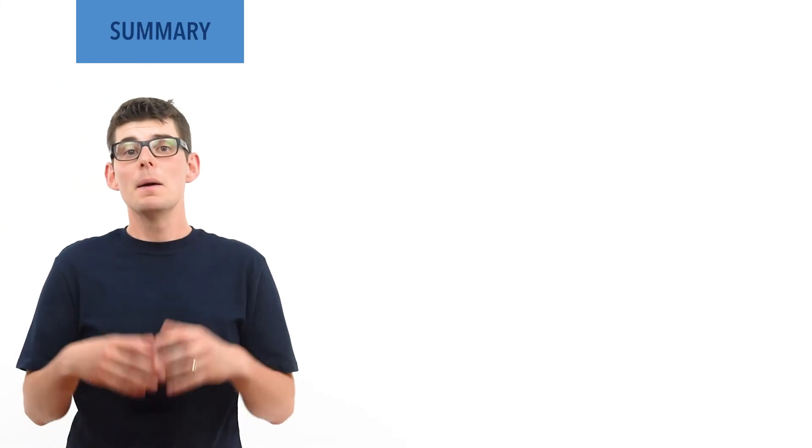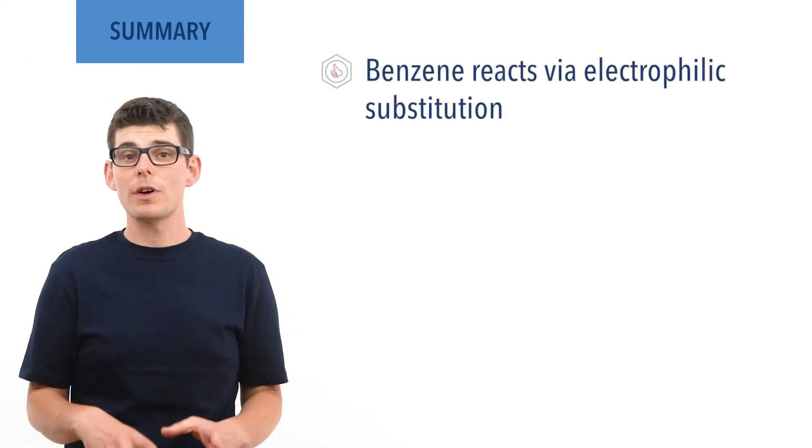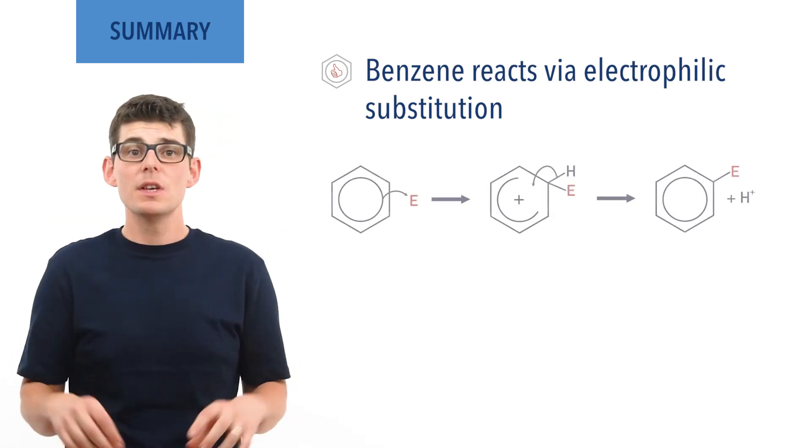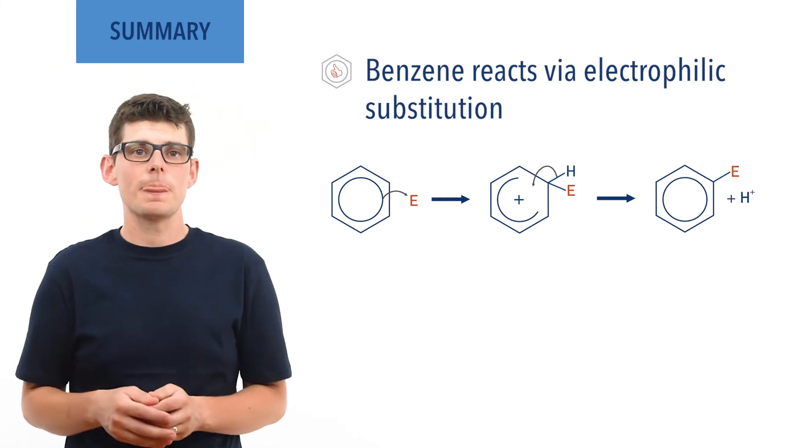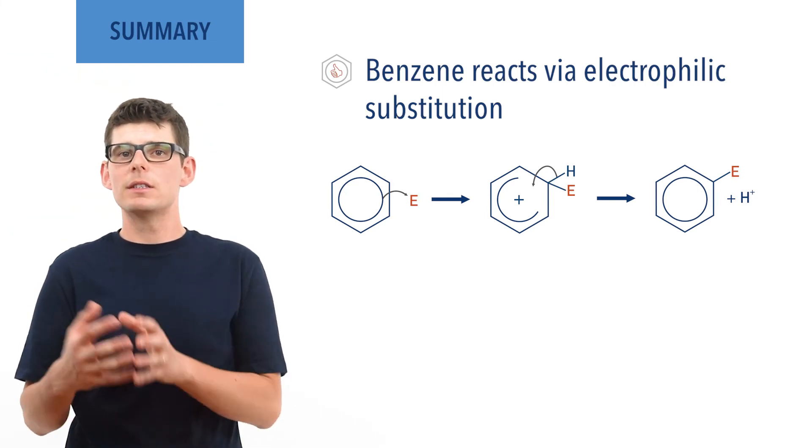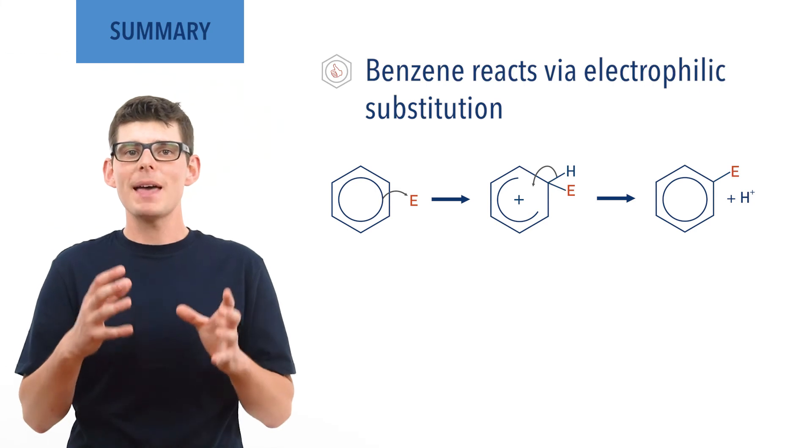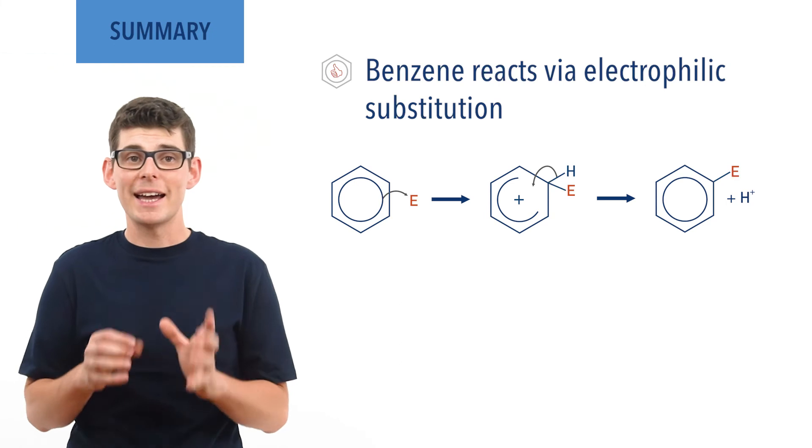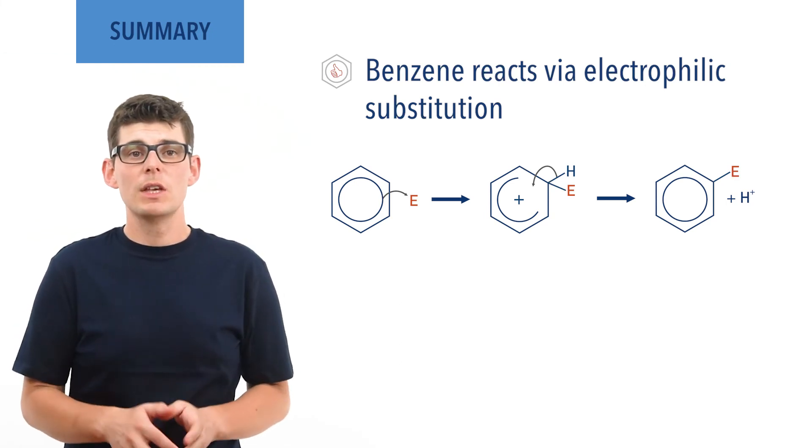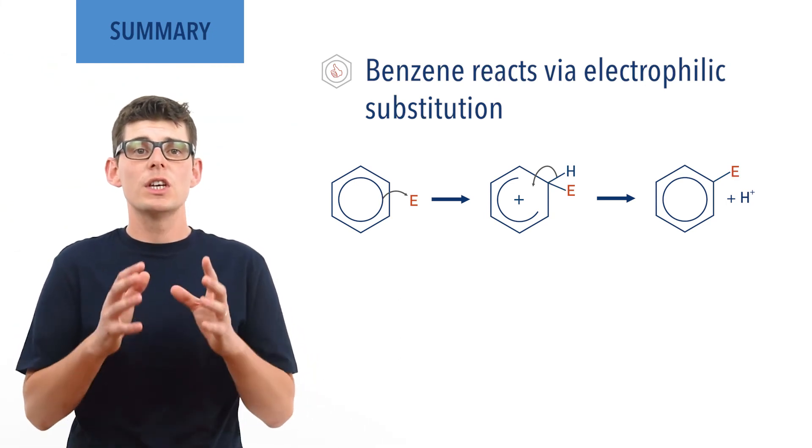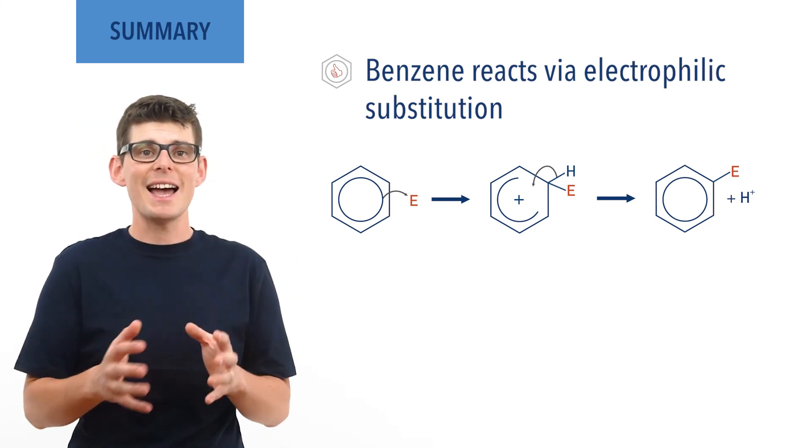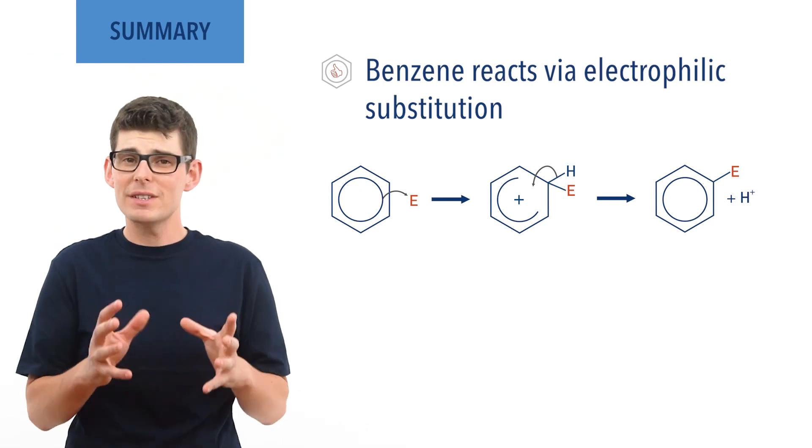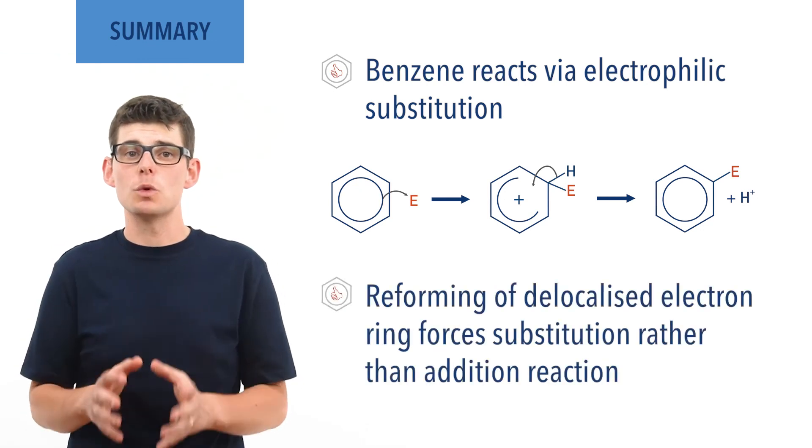So to summarize, benzene reacts with strong electrophiles in electrophilic substitution reactions. An electrophile is swapped for a hydrogen atom bonded to a carbon atom. The electrophile is attracted to the delocalized electron system in benzene and a pair of electrons from the system is used to form a bond between a carbon atom and the electrophile. To reform the full ring of delocalized electrons, the carbon-hydrogen bond breaks and the electrons from the bond move into the delocalized system. This step forces the reaction to proceed as a substitution reaction.